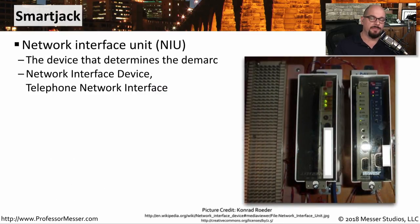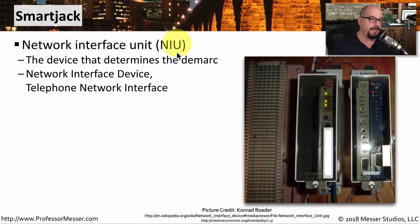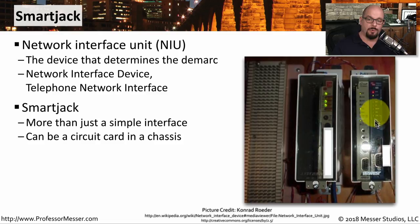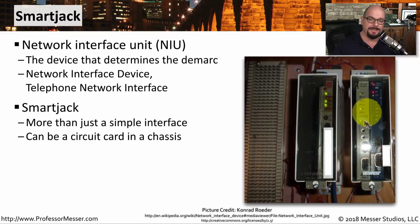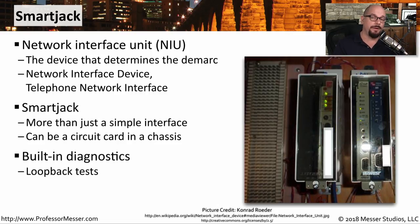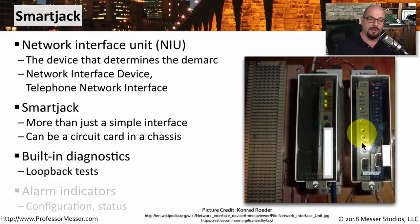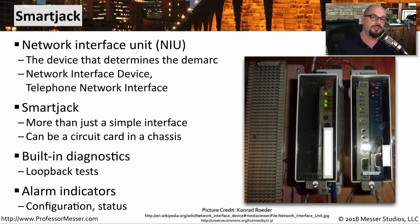Sometimes the wide area connection at the demarc is a bit more intelligent, and instead of having just a cable handoff, we would have a smart jack. This is also commonly called a network interface unit, or NIU. The smart jack is more than just a simple cable handoff, as you can see by these pictures. These are inside the provider side of the communication, so you don't usually have access to the equipment inside of the smart jack. The smart jack is a way for your wide area network provider to perform some additional functions. For example, they could set up a loopback and provide diagnostics directly from this interface at the demarc. This can also provide alarm information and reconfiguration details for the wide area network provider, so they can make a number of changes on the smart jack without having to visit your location.